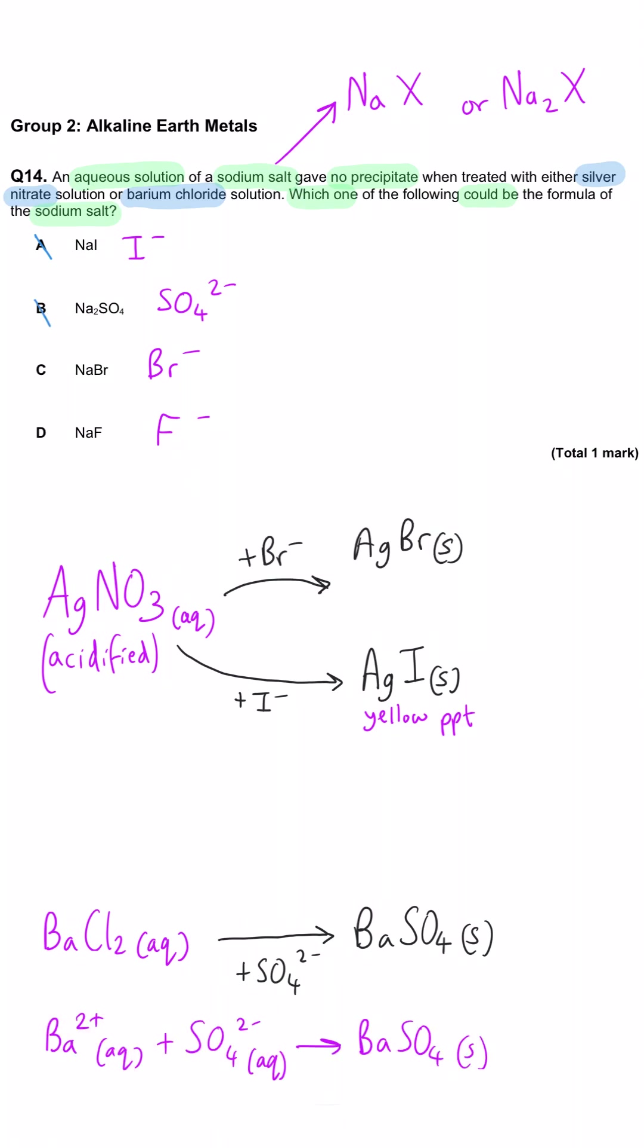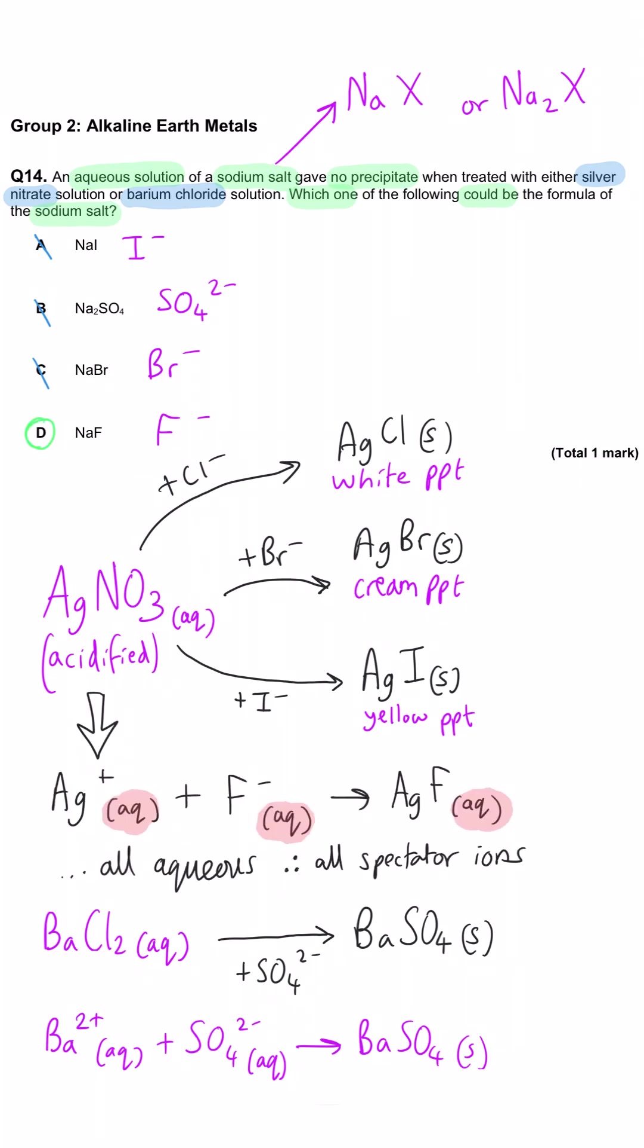The bromide in C would give us a cream precipitate with the silver nitrate. And so that means that D must be the correct answer. Sodium fluoride would not give a precipitate at all because the silver fluoride that could form is totally soluble and no precipitate forms.